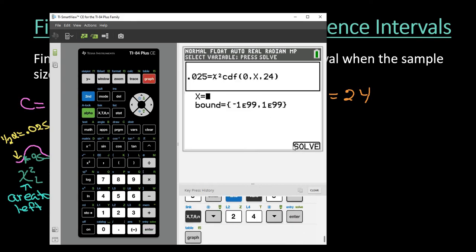And if I hit graph, at first it's just going to give me a value. That's not the correct answer. So I'm going to hit solve. I want to hit solve for this. And I can see that it's 12.401.